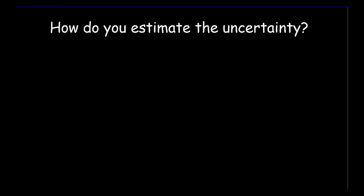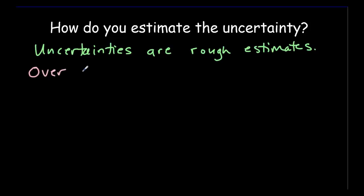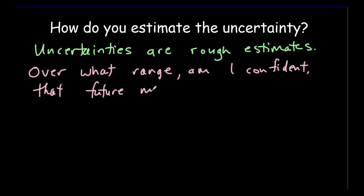The question now becomes, if you make a measurement, how do you estimate the uncertainty in that measurement? And I have a few guidelines for you here. The first is to remember that uncertainties are rough estimates. And so what you've really got to do is to ask yourself, over what range am I confident that future measurements, keeping everything consistent, will lie within. That's really what it's all about.